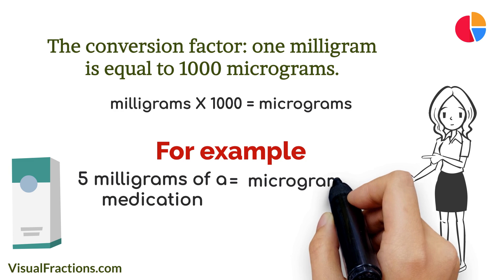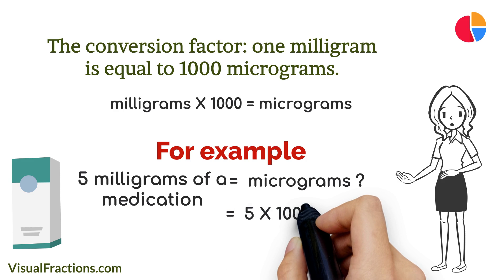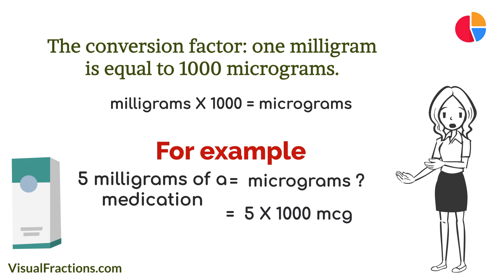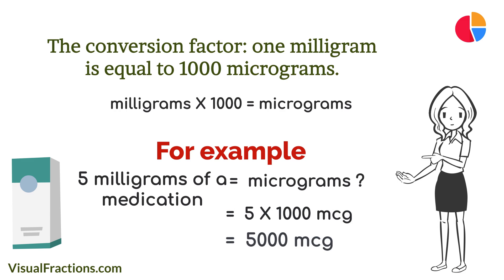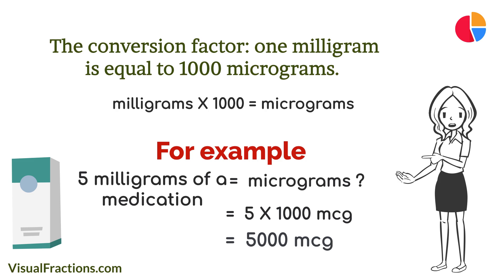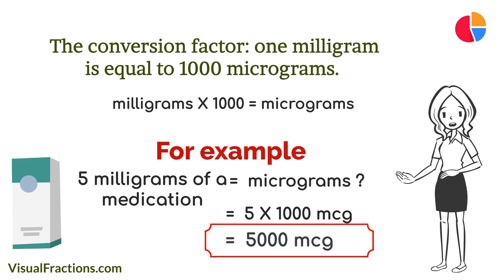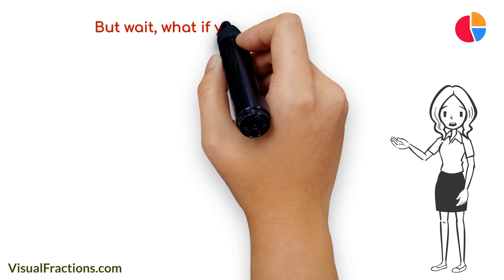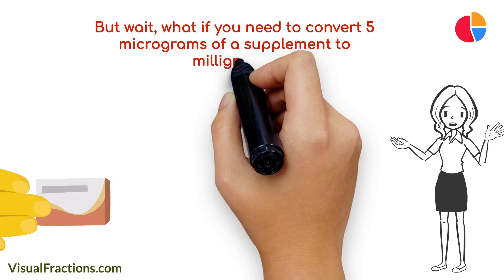Let's walk through an example. Say you have 5 milligrams of a medication that you need to convert to micrograms. We start by multiplying 5 by 1000. This gives us 5000 micrograms. 5 milligrams is equal to 5000 micrograms.